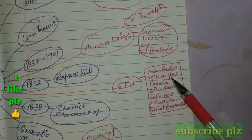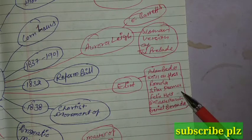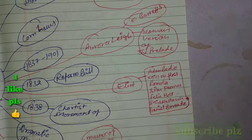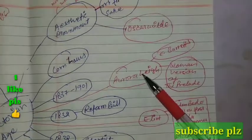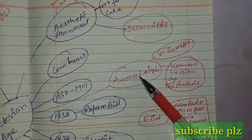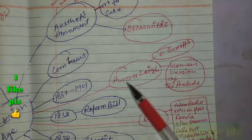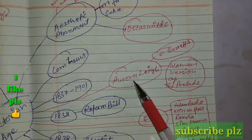Let's talk about George Eliot. Adam Bede, Mill on the Floss, Romola, Silas Marner, Felix Holt, Middlemarch, and Daniel Deronda — these are her important works.